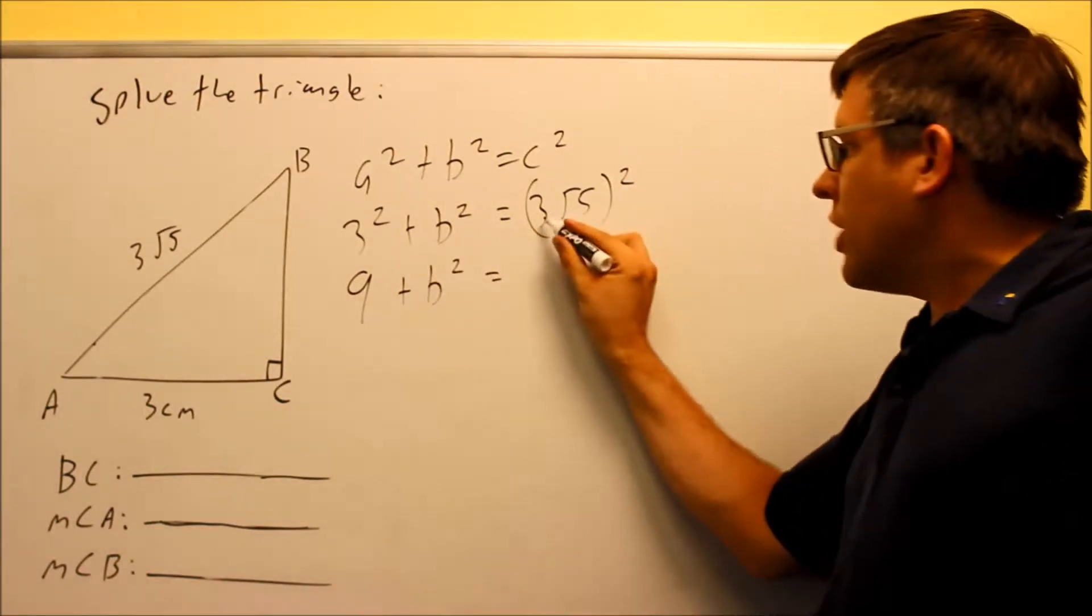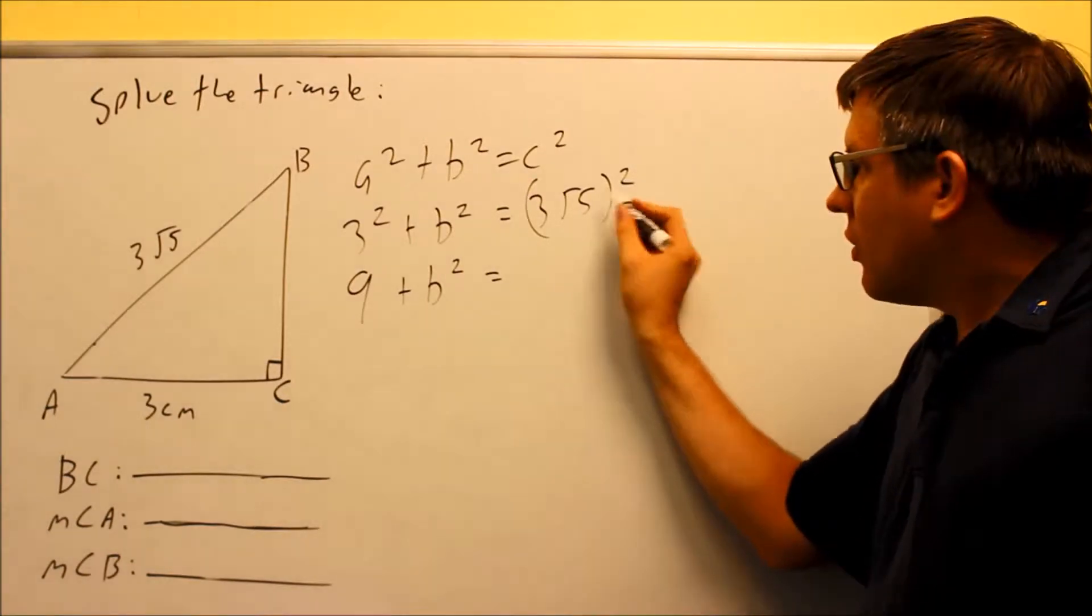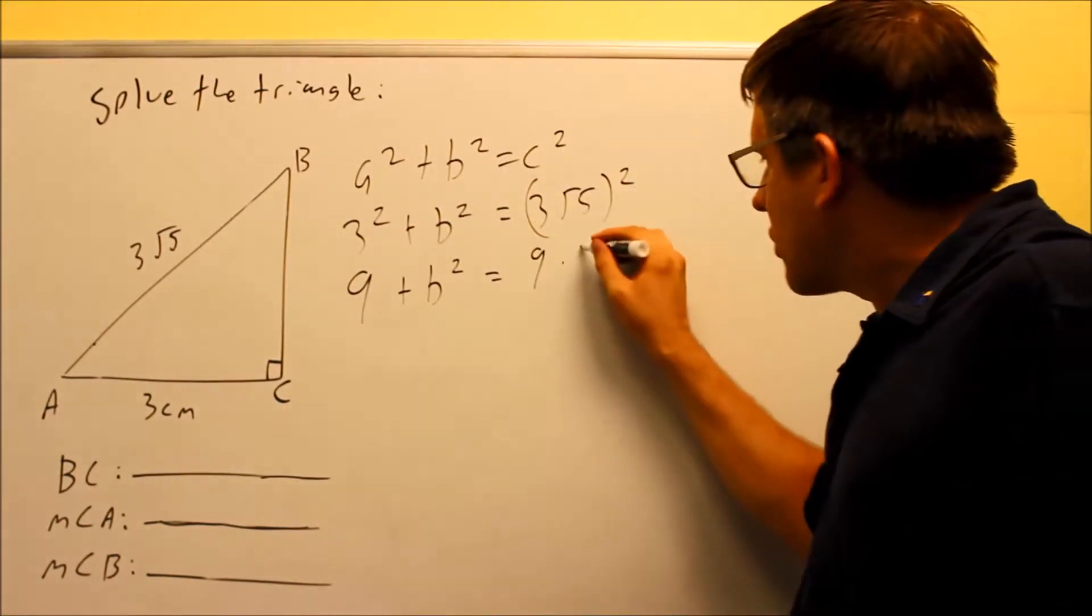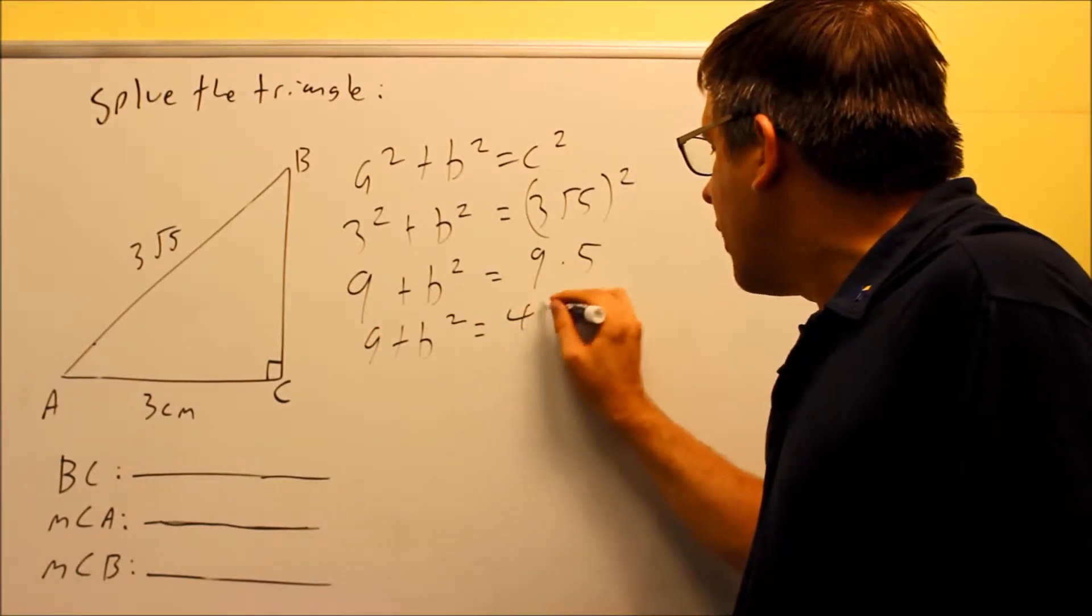Now when you square this, we have to square both things on the inside of the parentheses. Don't forget to square both. The 3 gets squared, that's 9, and then the radical goes away when you square this so we really get 9 times 5 or we get 45 for that one.